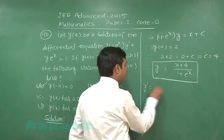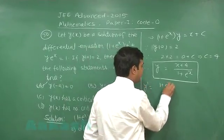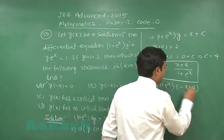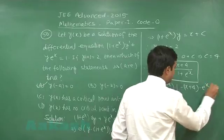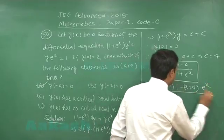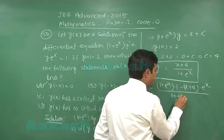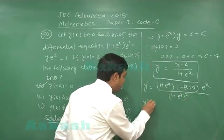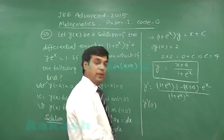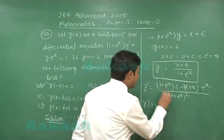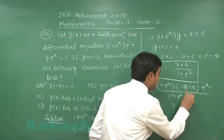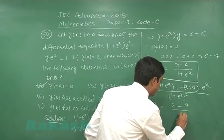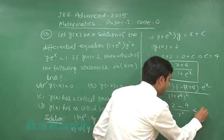Let us differentiate it. dy by dx is 1 plus e x into 1 minus x plus 4 into e x divided by 1 plus e x whole square. If I find derivative at 0, we see it is 1 plus 1 minus 1 that is 2 minus 4 upon 2 square which is negative.